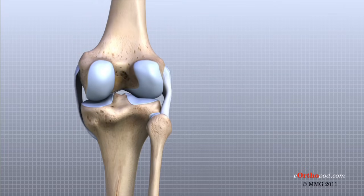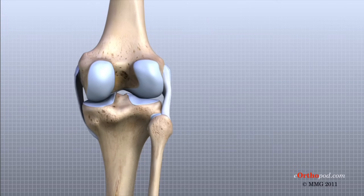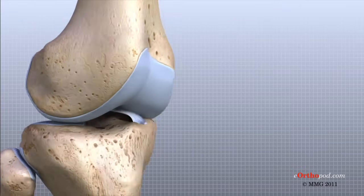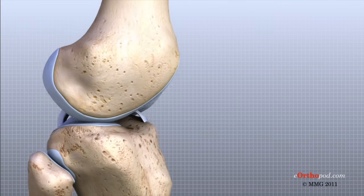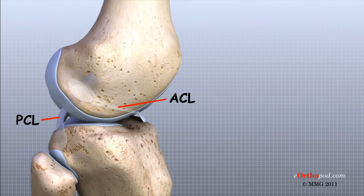The MCL and the LCL prevent the knee from moving too far in the side-to-side direction. The ACL and the PCL control the front-to-back motion of the knee joint. The ACL keeps the tibia from sliding too far forward in relation to the femur, while the PCL keeps the tibia from sliding too far backward. Working together, the two cruciate ligaments control the back-and-forth motion of the knee. Taken all together, the ligaments are the most important structures controlling the stability of the knee.